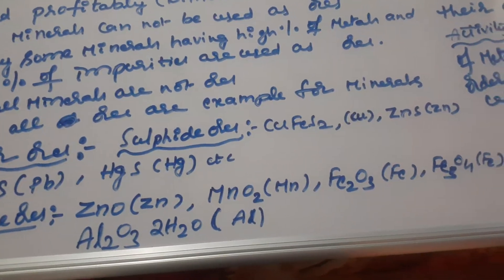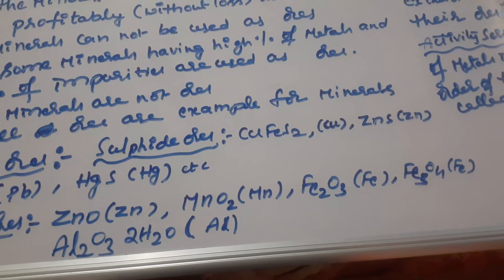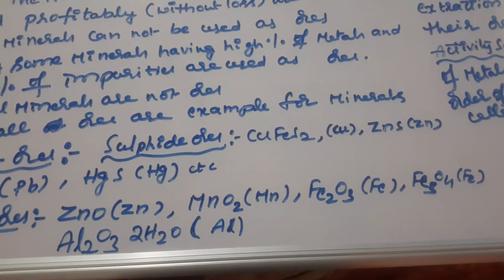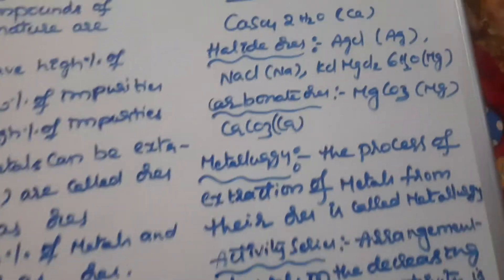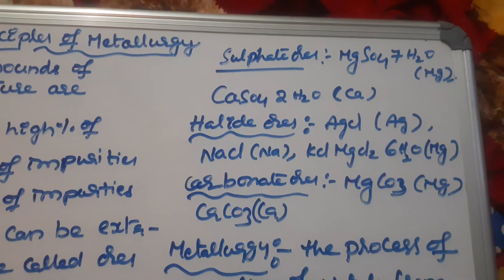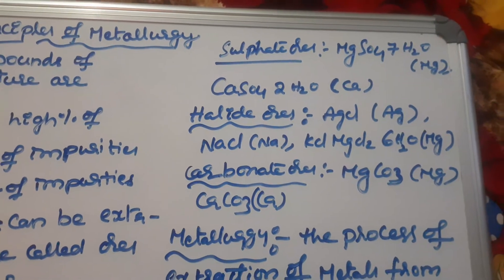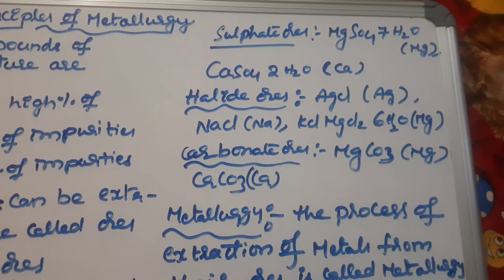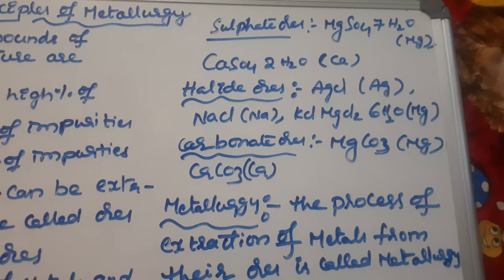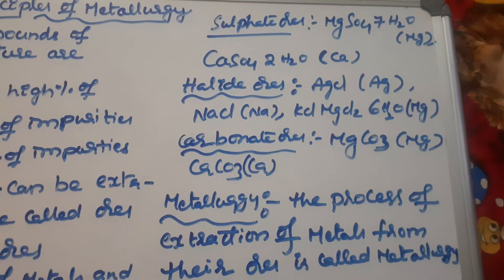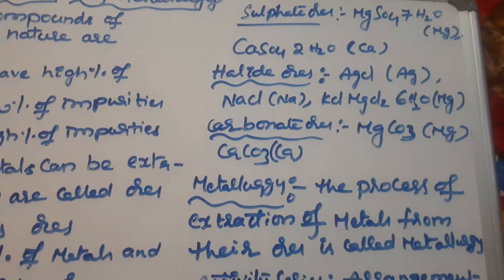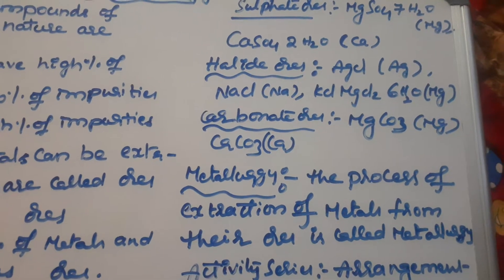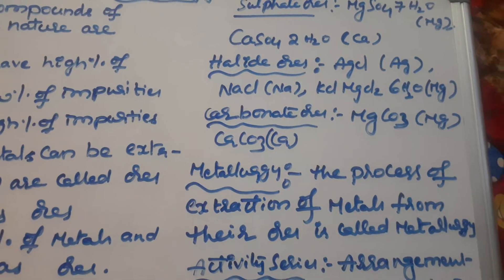Sulfate ores: Epsom salt (MgSO₄·7H₂O) is the ore of magnesium; gypsum (CaSO₄·2H₂O) is the ore of calcium. Halide ores: horn silver or silver chloride (AgCl) is the ore of silver; rock salt (NaCl) is the ore of sodium; carnallite (KCl·MgCl₂·6H₂O) is the ore of magnesium. Carbonate ores: magnesite (MgCO₃) is the ore of magnesium; limestone (CaCO₃) is the ore of calcium.